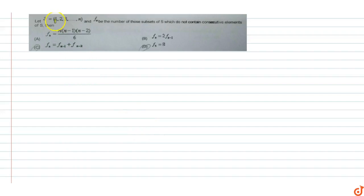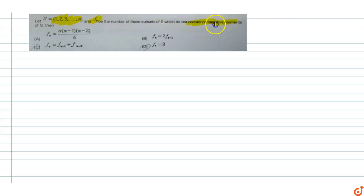In this question, S is equal to {1, 2, 3, 4, ..., n}. Let f(n) be the number of those subsets of S which do not contain consecutive elements of S. So what will f(n) be?